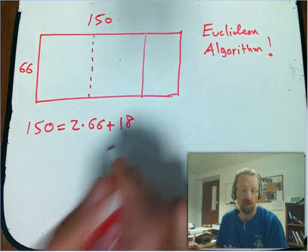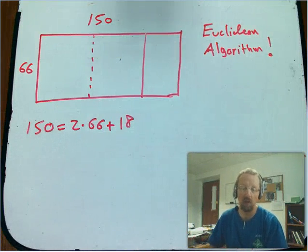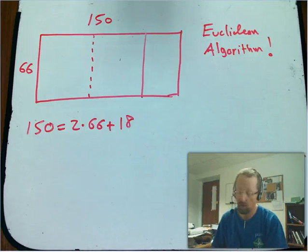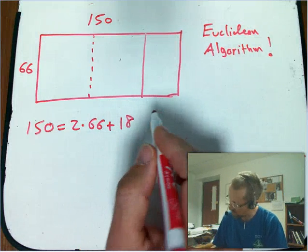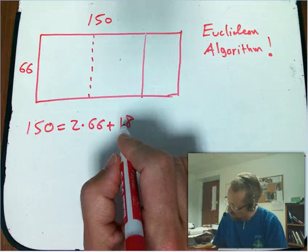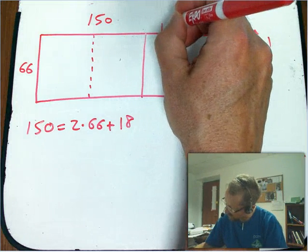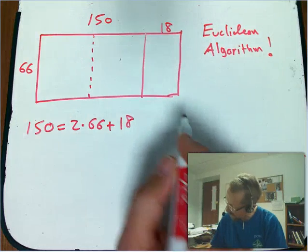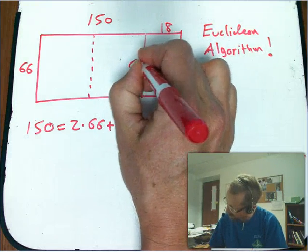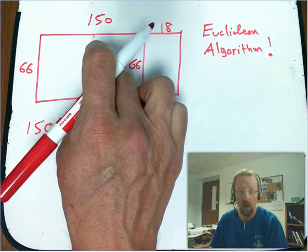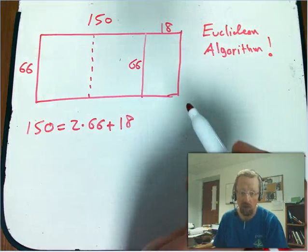So it's just division, which is guaranteed by the division algorithm and the division theorem for integers. It's really important that that works. So there's 18. So this side here is 18 long, and it's now a rectangle, the leftover. So I've got two squares, 66 by 66 squares, and then I've got an 18 by 66 rectangle.